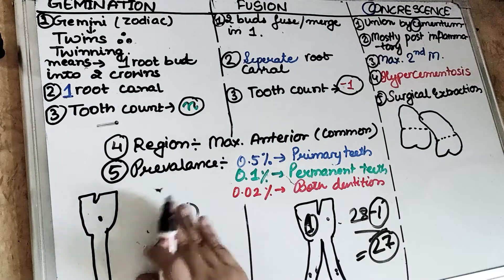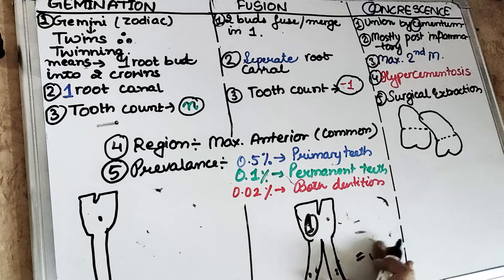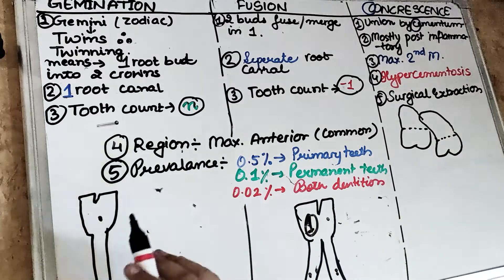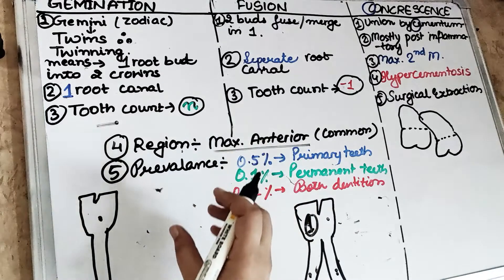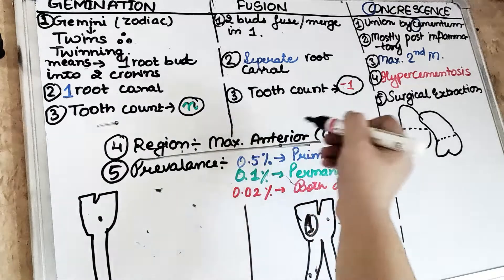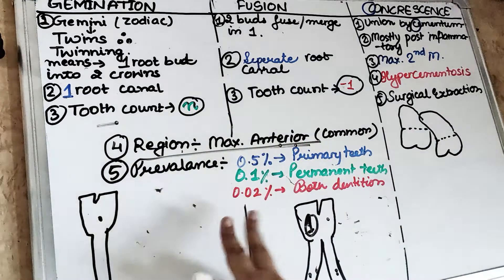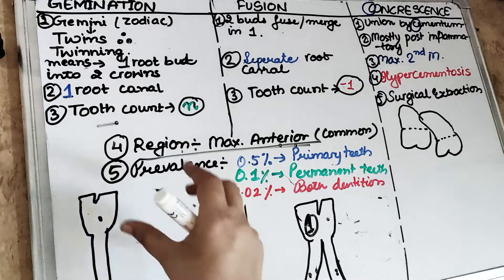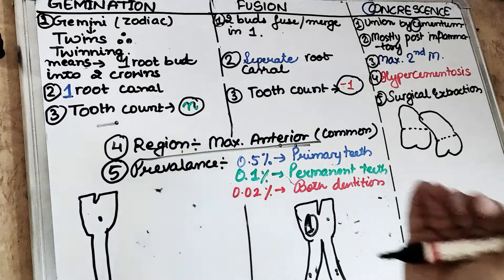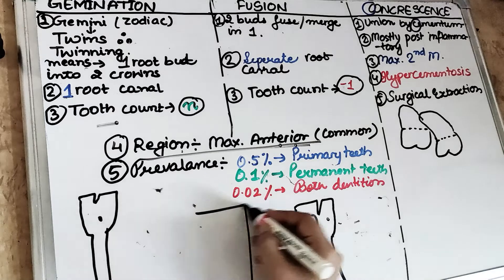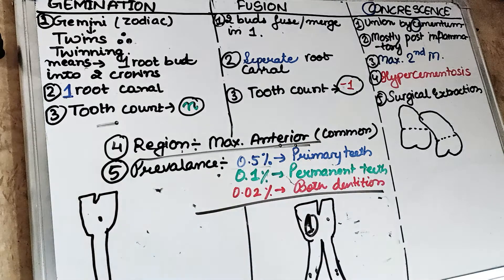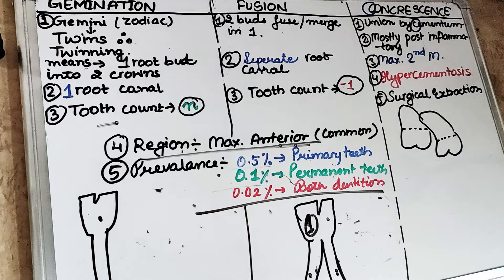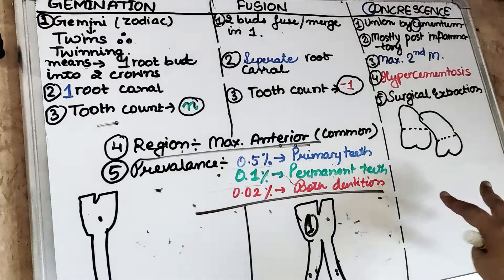Now, the two common points for both gemination and fusion: the most common region affected is the maxillary anterior teeth — especially the incisors and lateral incisors. Prevalence-wise, it is usually present in the primary dentition; it is less common in permanent dentition. Overall, 0.5% of the population is affected by gemination or fusion. The incidence in permanent dentition is 0.1%, and when both dentitions are affected simultaneously, it is least common at 0.02%.